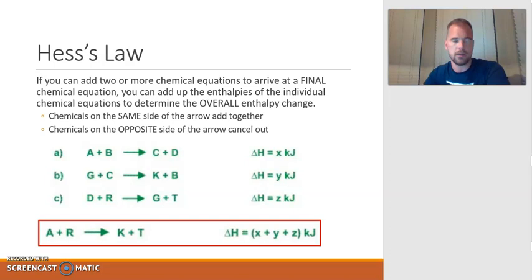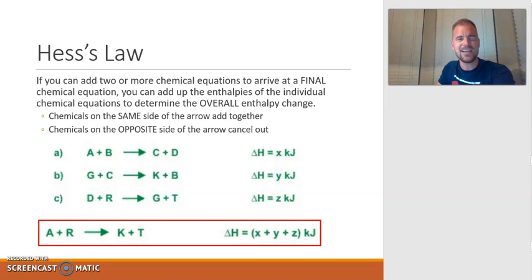That makes sense — add the equations, add the enthalpies. So all I have to do is just add these three together and get the overall enthalpy, right? Well, kind of. Sometimes you have to do a little finagling with these equations so that they add up perfectly to get the overall equation that you want. We're going to cover that in the next slide.